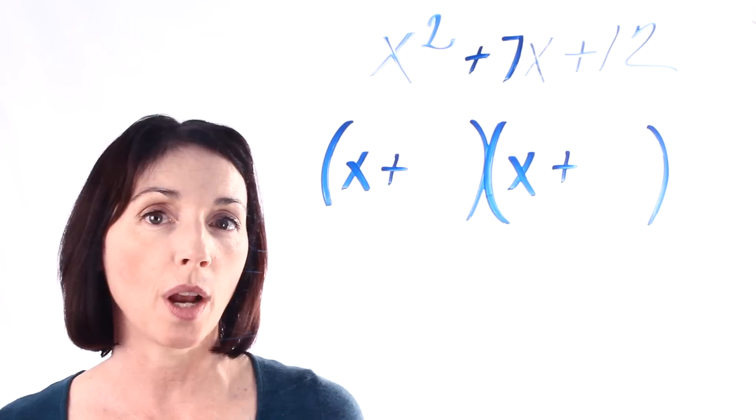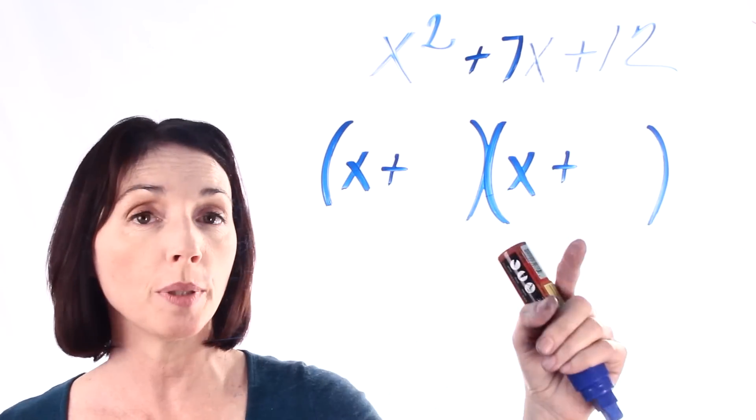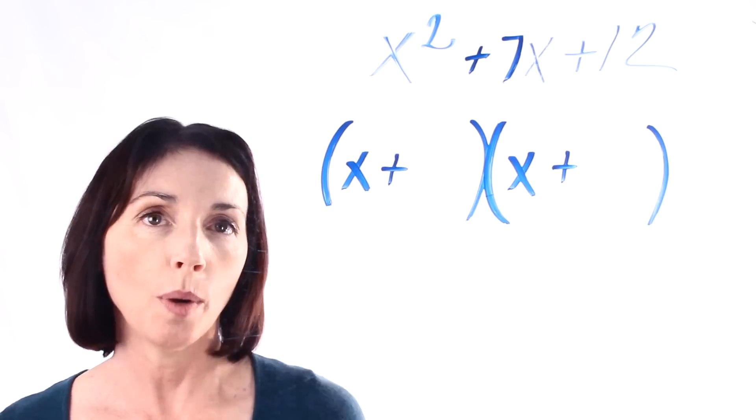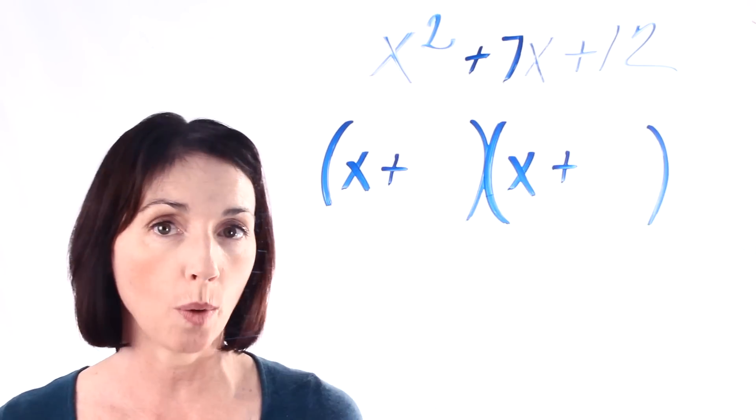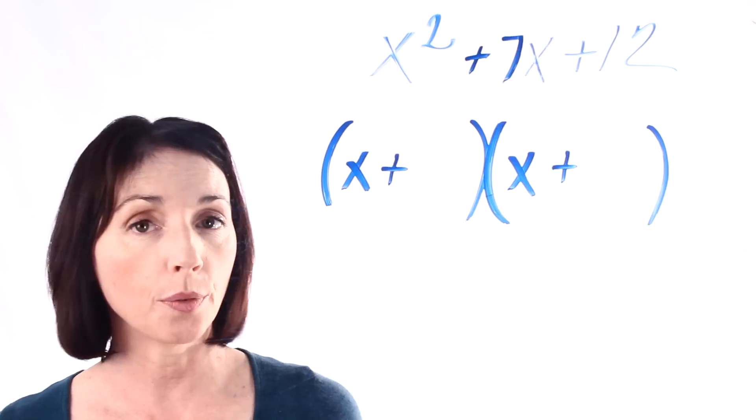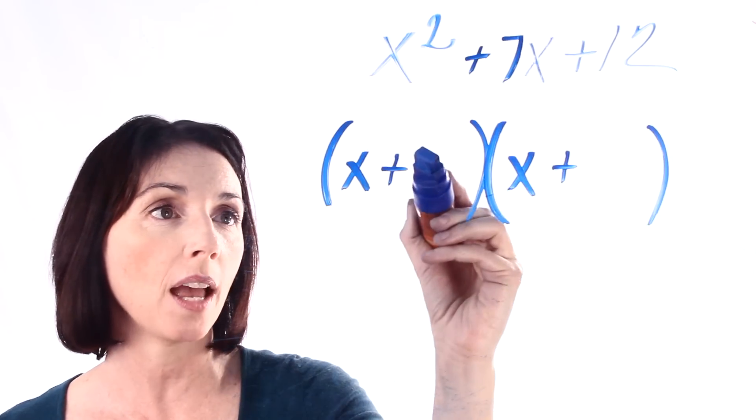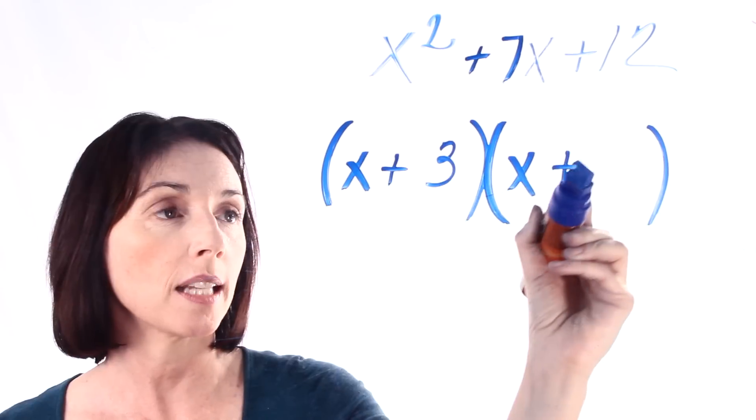So now we have to figure out what two numbers multiply together to be 12 and add together to be 7. Well some of the factors of 12 are 1 and 12, 2 and 6, and 3 and 4. 3 plus 4 is equal to 7. So what we have is x plus 3 times x plus 4.